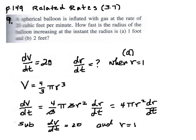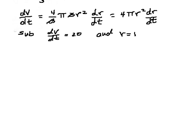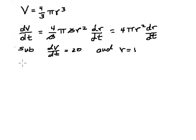Let me scroll here a bit. Okay, so we have 20 is equal to 4π(1)² dr/dt.